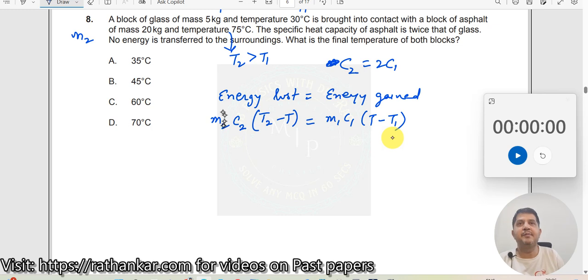Now what we'll do is we'll substitute the values. What is M1, M2? M2 is 20, and C2 equal to 2 times C1 multiplied by T2 minus T. T2 is equal to 75, 75 minus T is equal to M1, M1 is 5 kg, and this is C1 multiplied by T minus T1. T1 is 30. Now what we'll do is we'll cancel this C1. The C1 goes away.